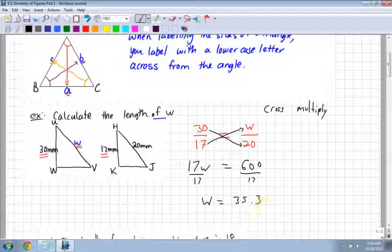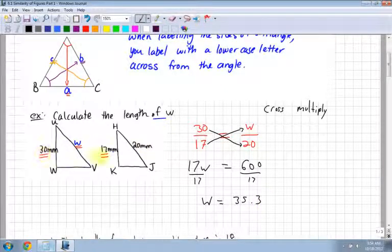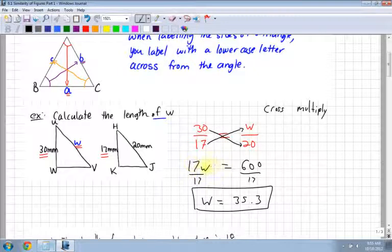My value for W is 35.3. Check to make sure it makes sense. It's bigger than 20, which is good, because 30 is bigger than 17. The value in my first triangle is bigger than the value in my second triangle with the like side. So cross multiply and solve for the value of your letter.